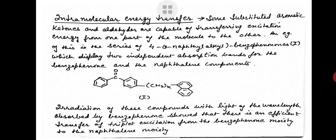Now let us study intramolecular energy transfer. Some substituted aromatic ketones and aldehydes are capable of transferring excitation energy from one part of the molecule to another. An example is the series of four 1-naphthyl alkyl benzophenones, which display two independent absorption bands for the benzophenone and naphthalene components. Irradiation with light absorbed by benzophenone showed an efficient transfer of triplet excitation from the benzophenone moiety to the naphthalene moiety. Thank you so much.